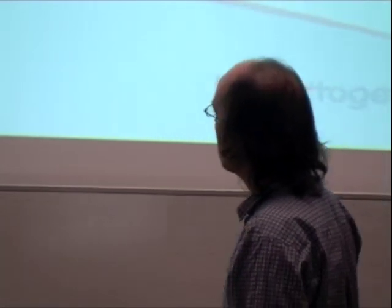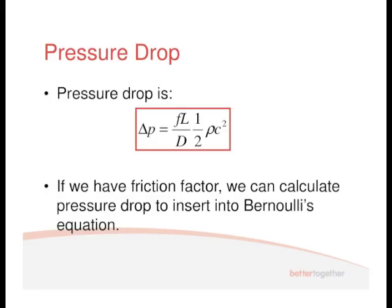We covered turbulent flow last week and came up with the equation for pressure drop as the friction factor times the length divided by the diameter times the dynamic pressure. Generally length and diameter we know, and we also tend to know the flow rate so we can work out the velocity C. But this F term — the friction factor — is the thing we have to work out.